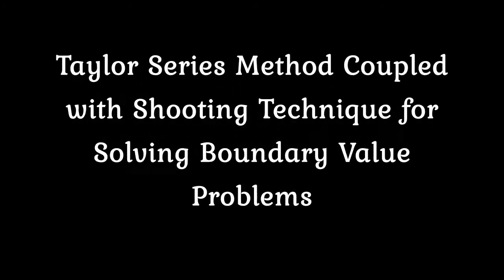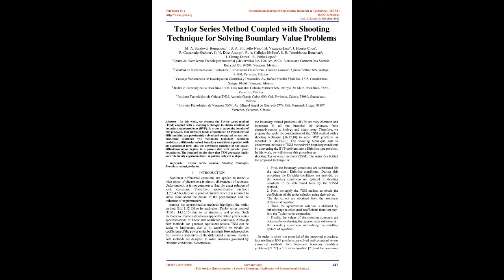Taylor series method coupled with shooting technique for solving boundary value problems. In this work we propose the Taylor series method (TSM) coupled with a shooting technique to obtain solutions of boundary value problems (BVP). In order to assess the validity of this proposal, different kinds of nonlinear BVP problems are approximately solved and compared versus their numerical solutions: two Neumann boundary condition problems, a fifth-order mixed boundary conditions equation with an exponential term, and the governing equation of the steady diffusion-reaction regime in a porous slab with parallel plane boundaries. The obtained results show that TSM generates highly accurate, handy approximations requiring only a few steps. Keywords: Taylor series method, shooting technique, boundary value problems.